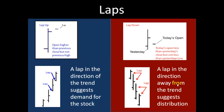Now let's take a quick look at laps. Just like a gap, you can lap up or down. Here's yesterday's range. A lap up will open higher than the previous close but not higher than the previous high — so here you have the high and here you have the close, and the lap falls in between. Here's what it might look like on a chart — here's several consecutive lap ups, and it always suggests strong demand for the stock in the direction of the trend.